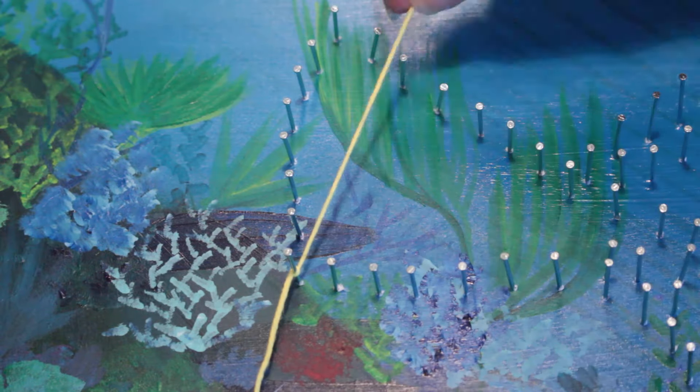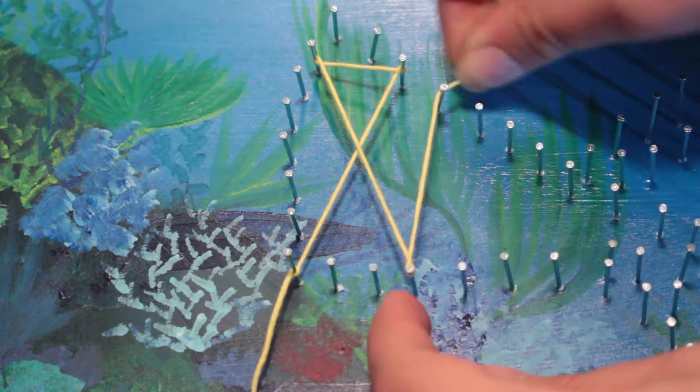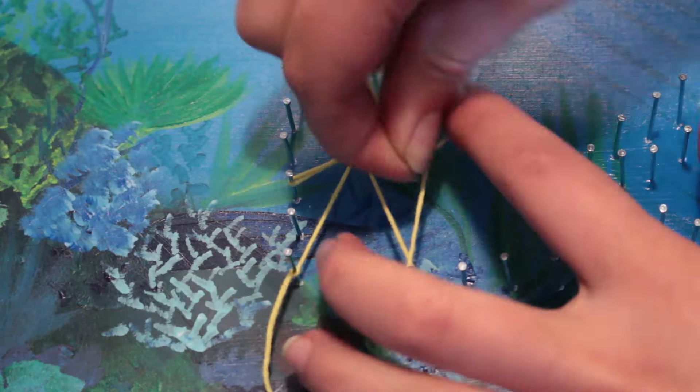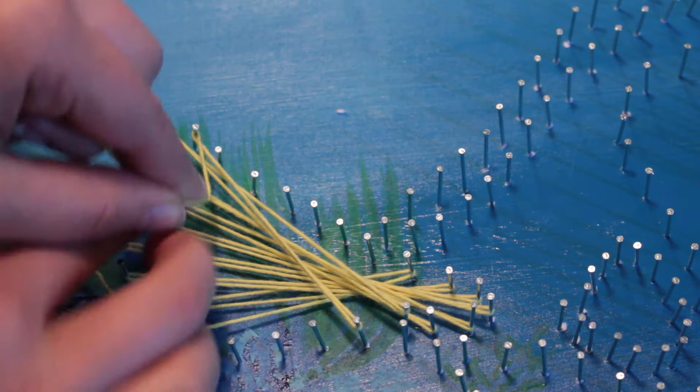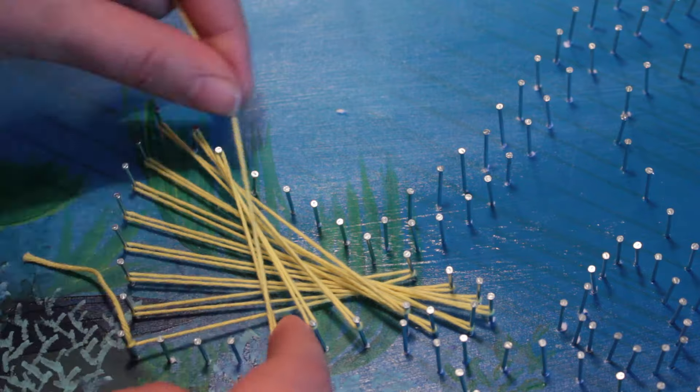Then take your yarn and just tie it around all the nails. You can either do it in a random fashion or you can make it look more artsy by putting yarn in between the opposite nails.